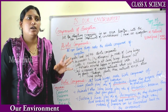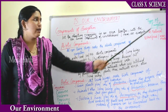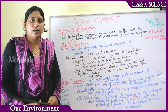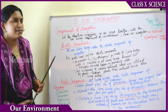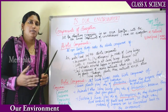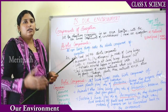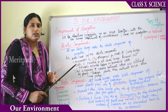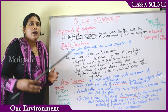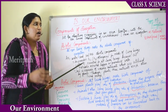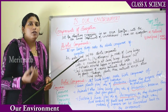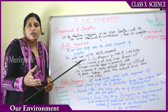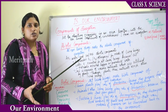Ecosystems are of two types: natural and man-made or artificial. A natural ecosystem can be a garden, where both living and non-living things interact with each other. Artificial or man-made ecosystems can be crop fields or agricultural fields.